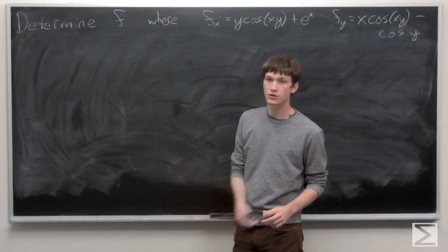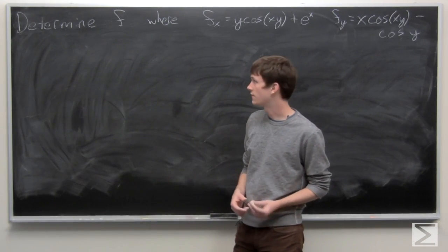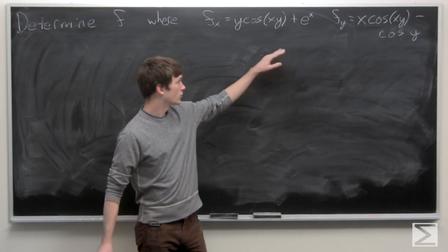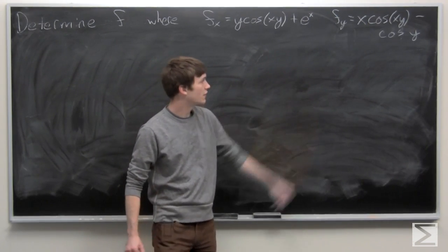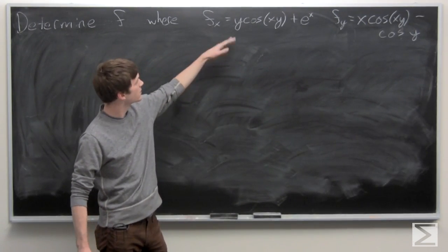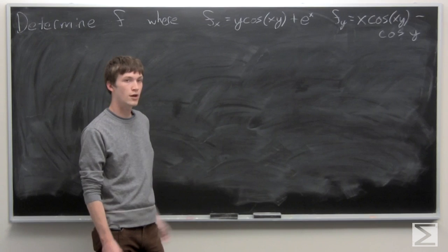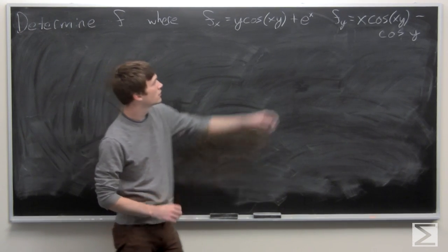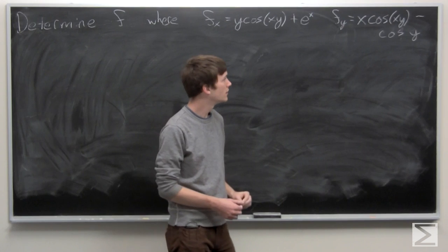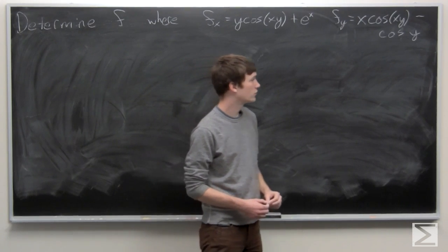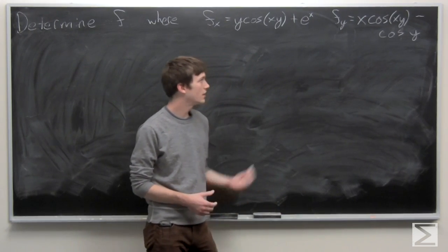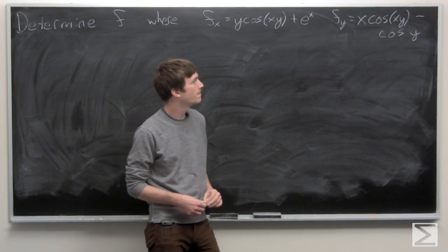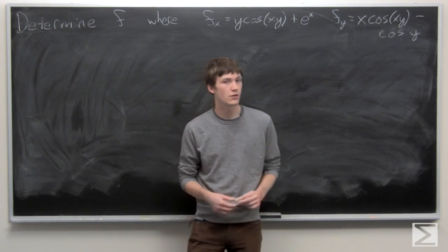In this problem, we're asked to determine function f, where we're given partial derivatives of f. f sub x is equal to y cosine of xy plus e to the x, and the partial derivative of f with respect to y is x times cosine of xy minus cosine y.